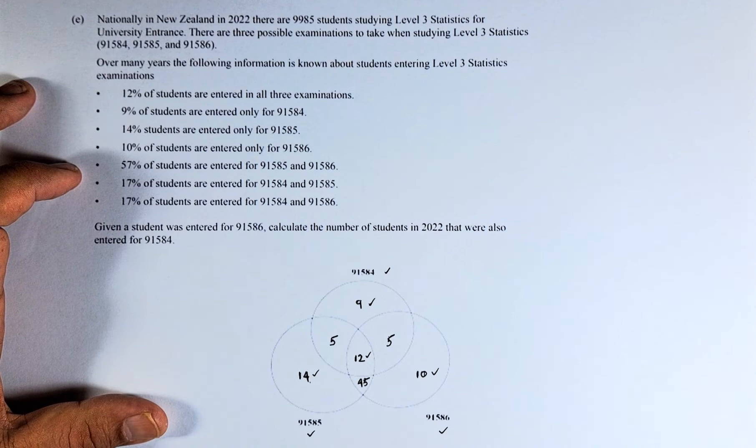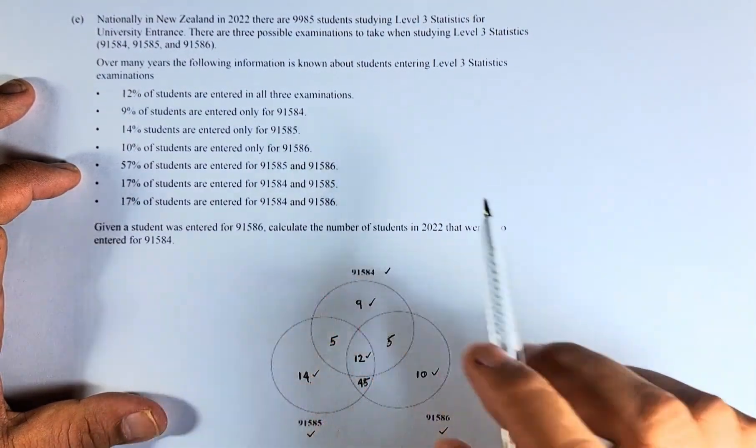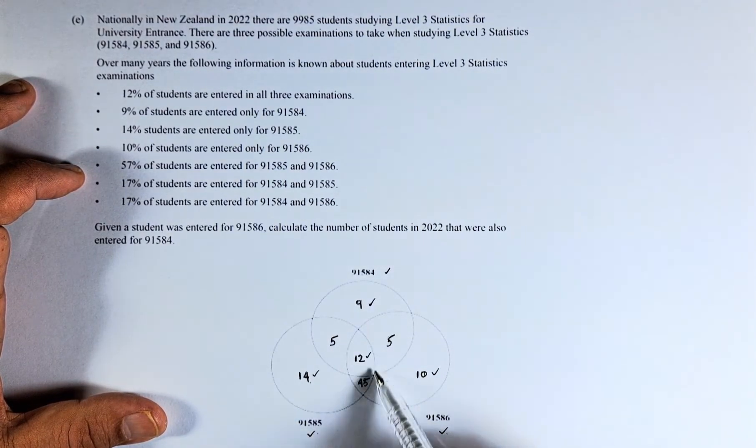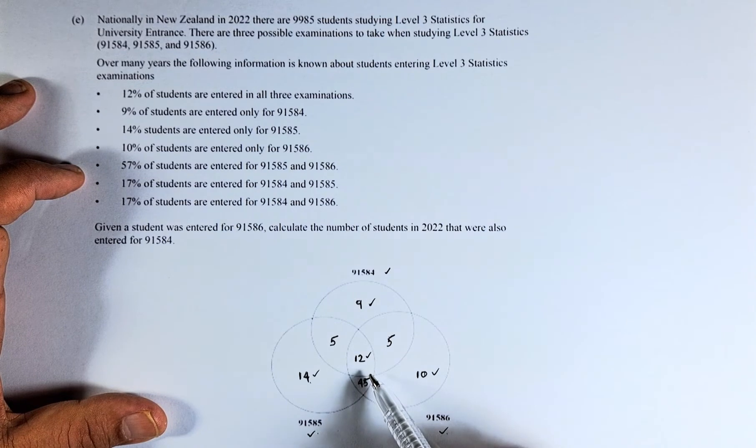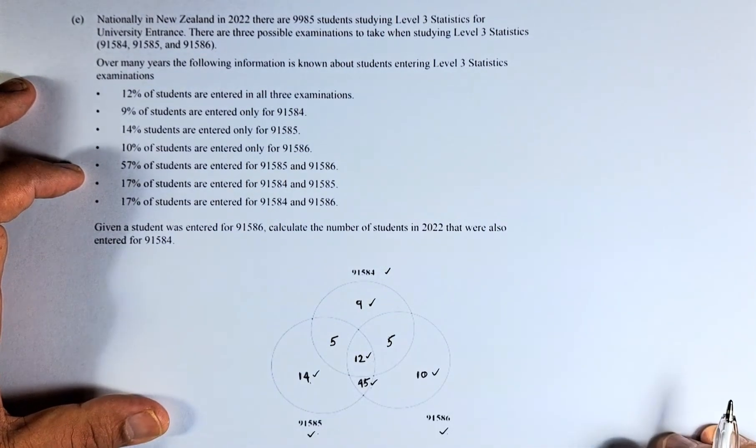Now a bit of calculation. 50% are entered for both 91585 and 91586. So 91585 and 91586, this is 57. So these 2 numbers here must add up to 57. If this is 12, that must be 45, so we can find 45 there.